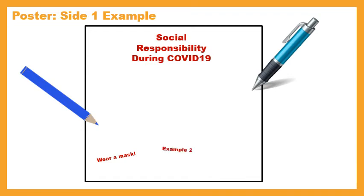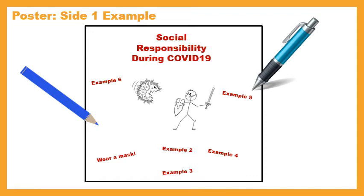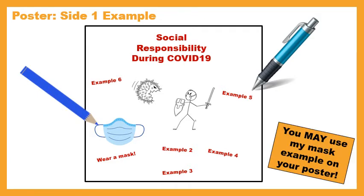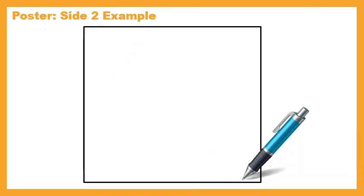You're going to give six examples. The first example is 'wear a mask,' then examples two through six — all ways that you can be pro-social or show social responsibility. Please include a picture. I want pictures, different colors, and words on this poster. You may use my mask example, but please think of another five examples of what people can do to prevent the spread of COVID.